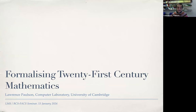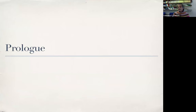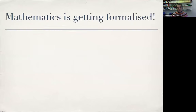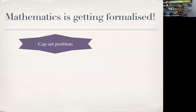Thank you very much, André, for that introduction. So, formalizing 21st century mathematics — why that exactly? It's been a dream of people for many decades, the idea of formalizing mathematics by computer. Like most such dreams, it seemed like it would never actually be realized. It would be something like nuclear fusion. But it's happening right now.